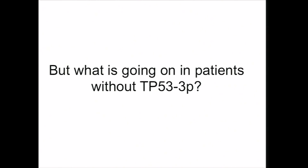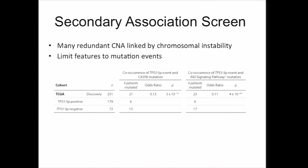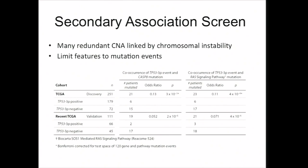Finally, there are about 72 patients that don't have these events and have relatively good outcomes. We conducted a secondary association screen to look for events specific to these 72 patients. Indeed, we find that these patients are enriched for caspase-8 mutations, which have a role in apoptosis, as well as RAS signaling pathway mutations, including a number of H-RAS gain-of-function mutations. These results validate in the recent TCGA patient cohorts with an even larger effect size.